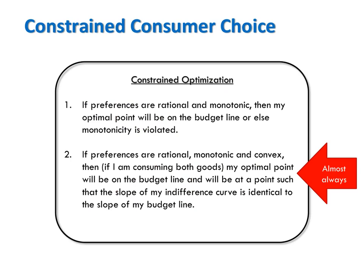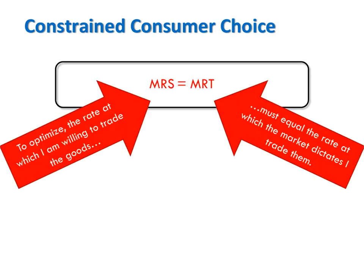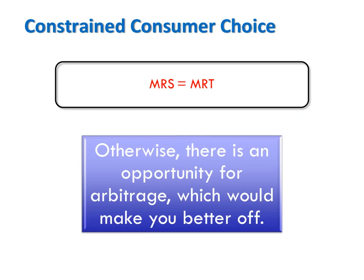So that's our second rule. The utility maximizing bundle not only has to be on the budget line, but also has to be at a point where the slope of the indifference curve — the MRS — equals the slope of the budget line — the MRT. Most of the time the slope of the indifference curve will be identical to the slope of the budget line at the utility maximizing bundle, though there are some exceptions we'll consider in class and in a different video. The reason for this tangency condition is that the rate at which you're willing to trade goods must equal the rate at which the market dictates you trade them through prices; otherwise there's an opportunity for arbitrage that would make you better off.